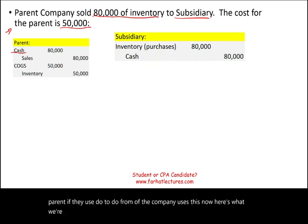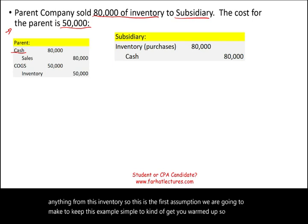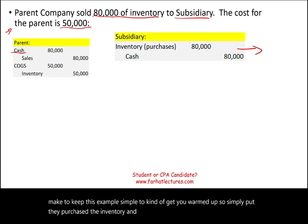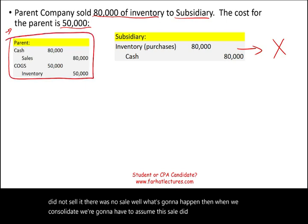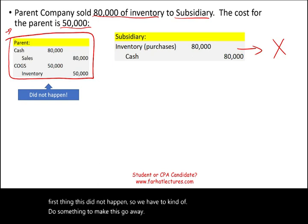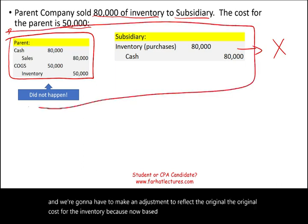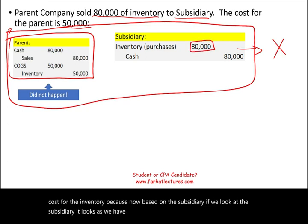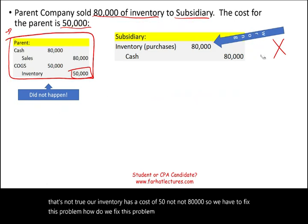We're going to assume that the subsidiary did not sell anything from this inventory — they purchased it but did not sell it to an outside party. When we consolidate, we have to assume this sale did not exist. We have to make an adjustment to reflect the original cost for the inventory, because on the subsidiary's books, it looks like we have inventory with a cost of $80,000. That's wrong. Our inventory has a cost of $50,000, not $80,000. We need to fix this problem step by step.